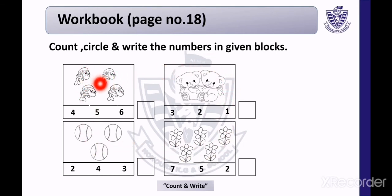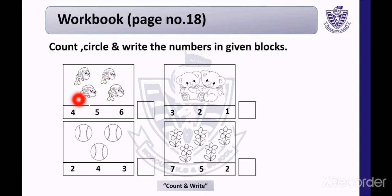Look at the first box. This is a picture of fish. Count with me — 1, 2, 3, 4. There are 4 fish. Now look at the first number — is it number 4? Yes. Circle the number 4, and write number 4 in the given block.